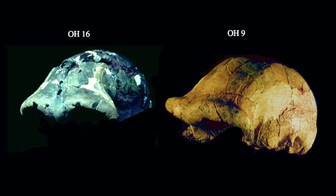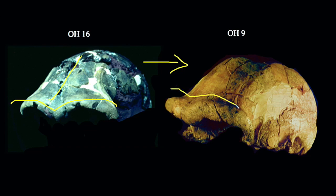Looking at this more closely, we can talk about some of the trends. OH-16 is one of the earlier Homo erectus materials from Olduvai Gorge. OH-9, dated maybe to 1.2 million years of age, is later in time. You can see similarity in terms of the morphology of these specimens. Both have a double-arched superorbital torus that extends fairly continuously into a fairly long sloping frontal. You have much more of a superorbital sulcus in the OH-9 specimen, associated with the larger superorbital torus in general.